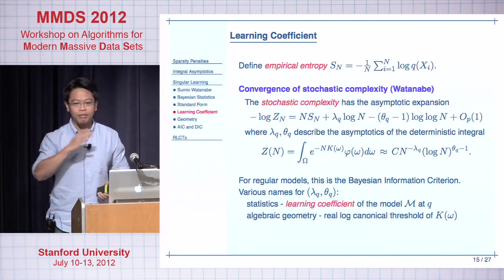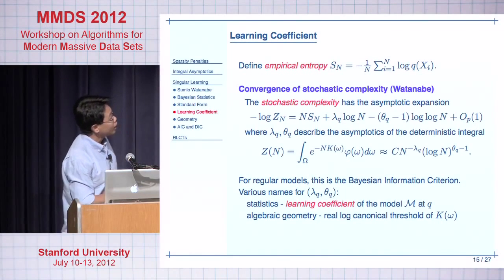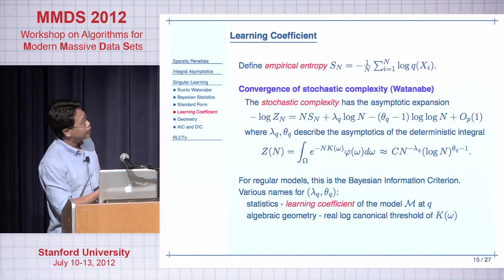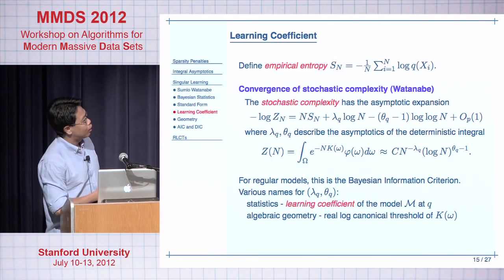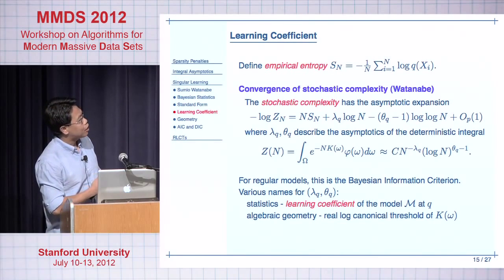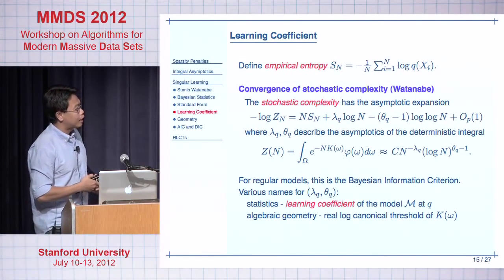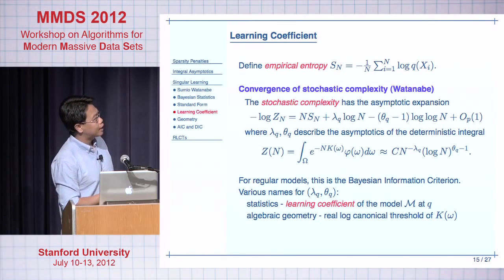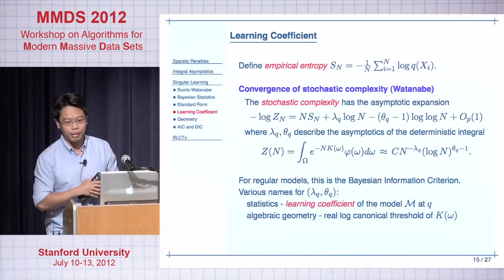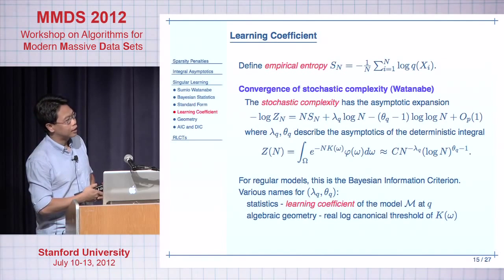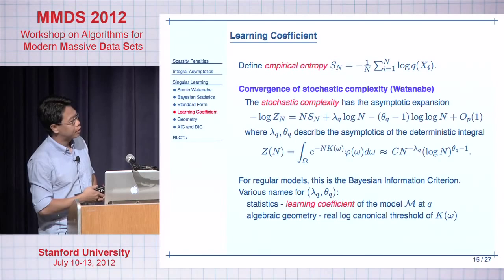Using his previous theorem, Watanabe proved something about the marginal likelihood integral. The negative log of the marginal likelihood — also called stochastic complexity — is given by a maximum likelihood term plus lambda times log n plus a log-log n term, where lambda and theta come from a deterministic integral. We started with something stochastic, and it turns out we only need to study something deterministic. For regular models, this specializes to the Bayesian information criterion. The lambda and theta appearing here are called the learning coefficient in statistics and the real log canonical threshold in algebraic geometry.